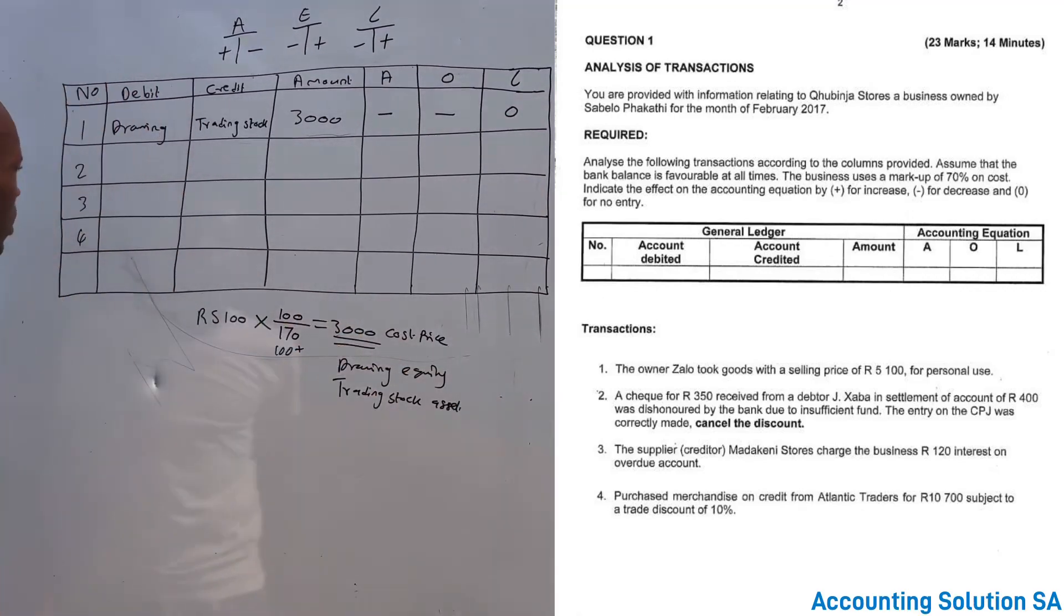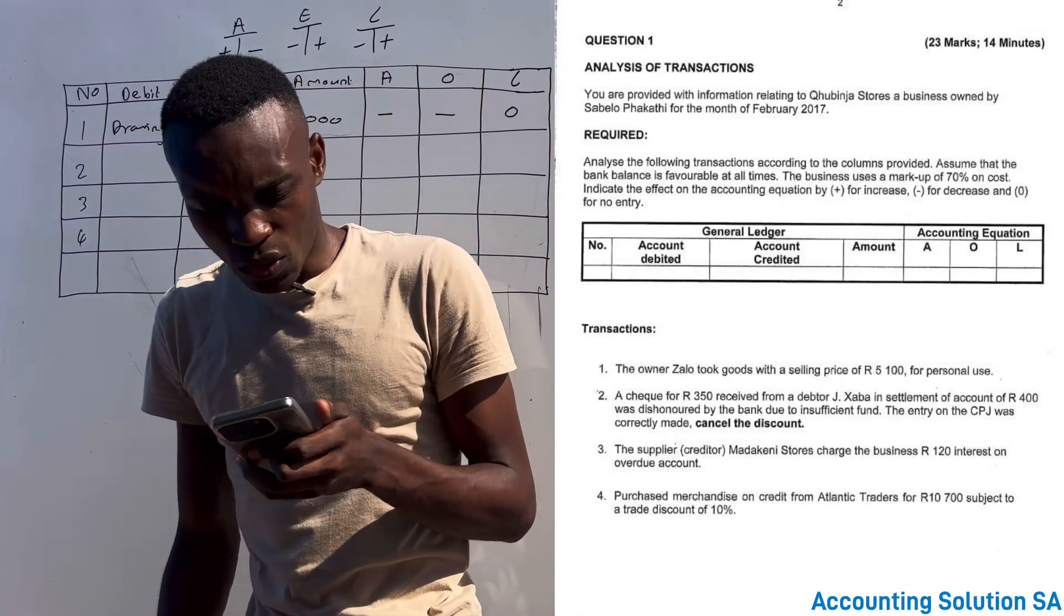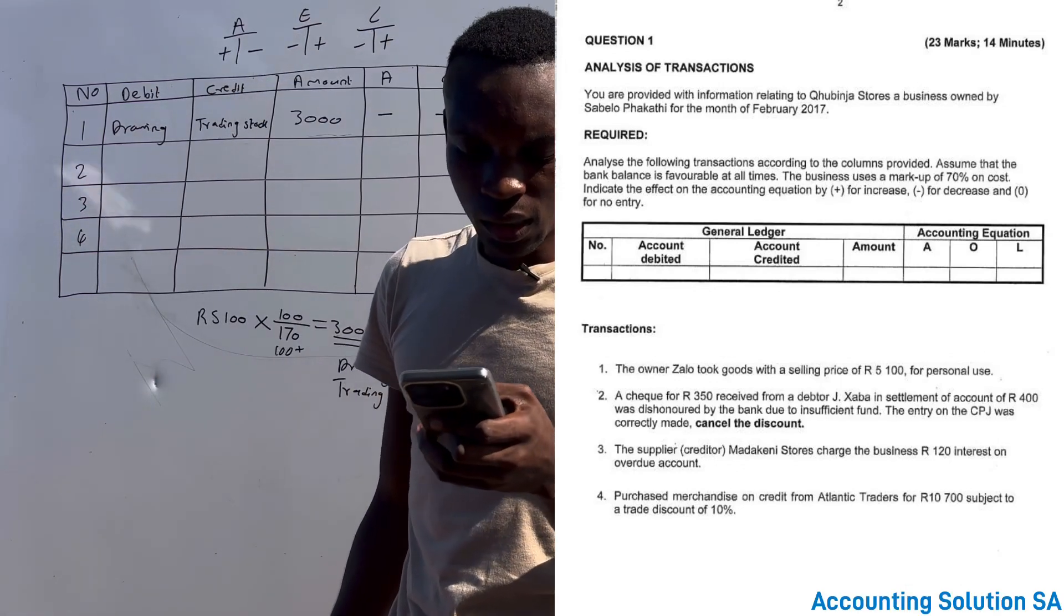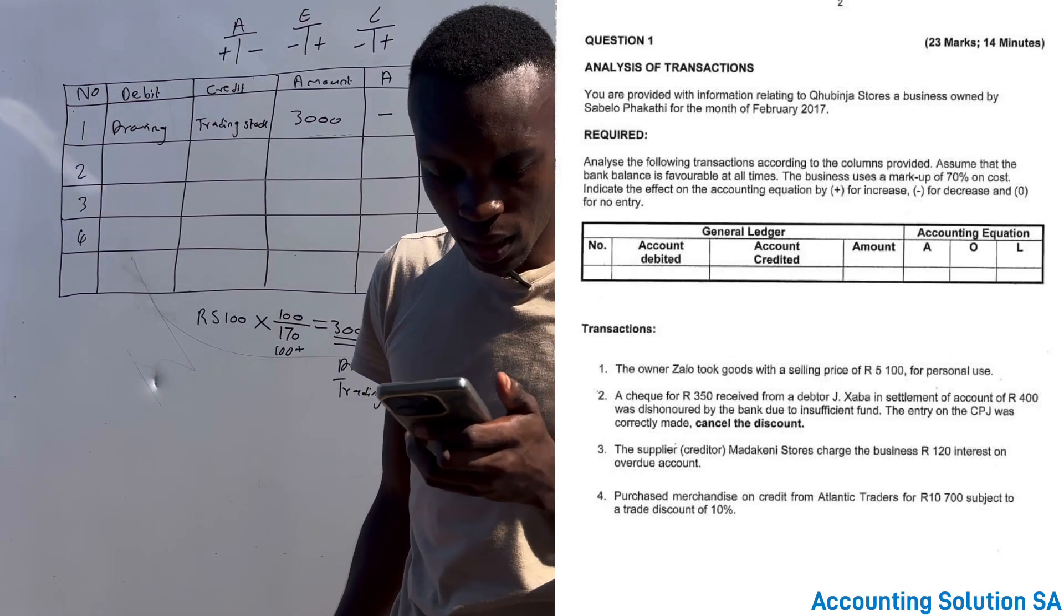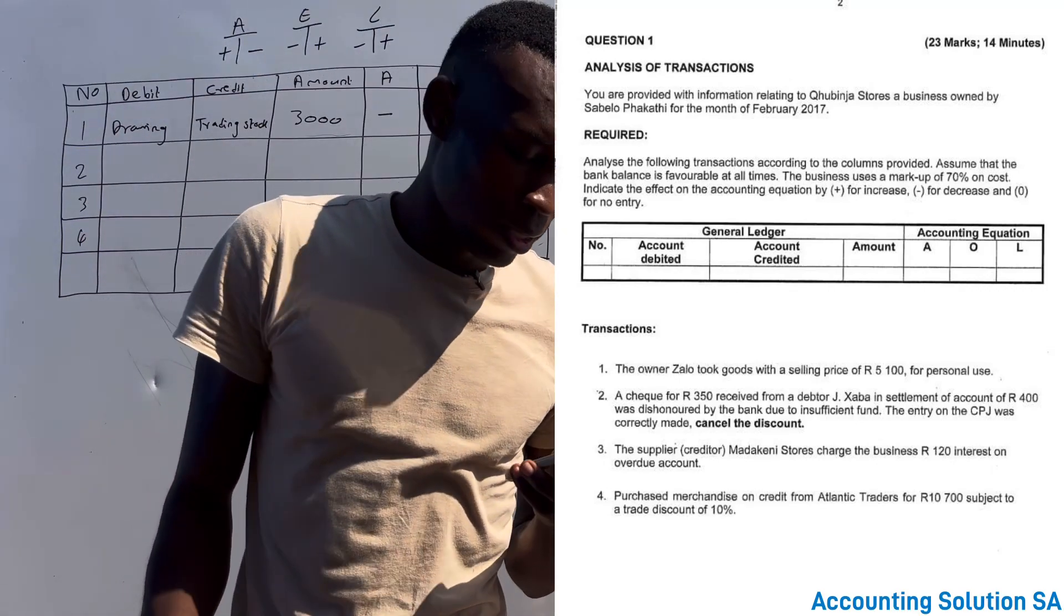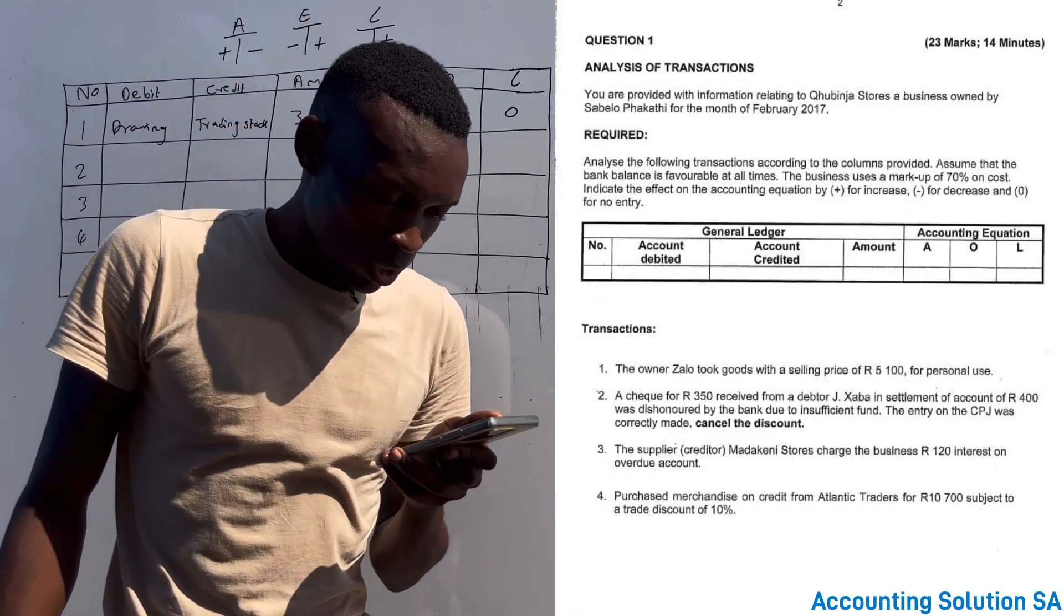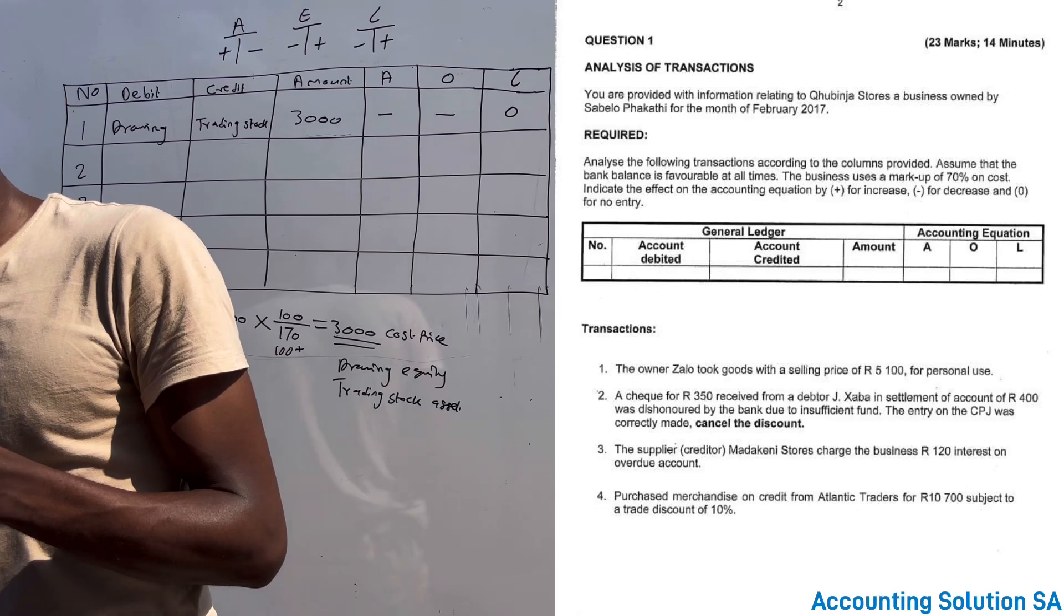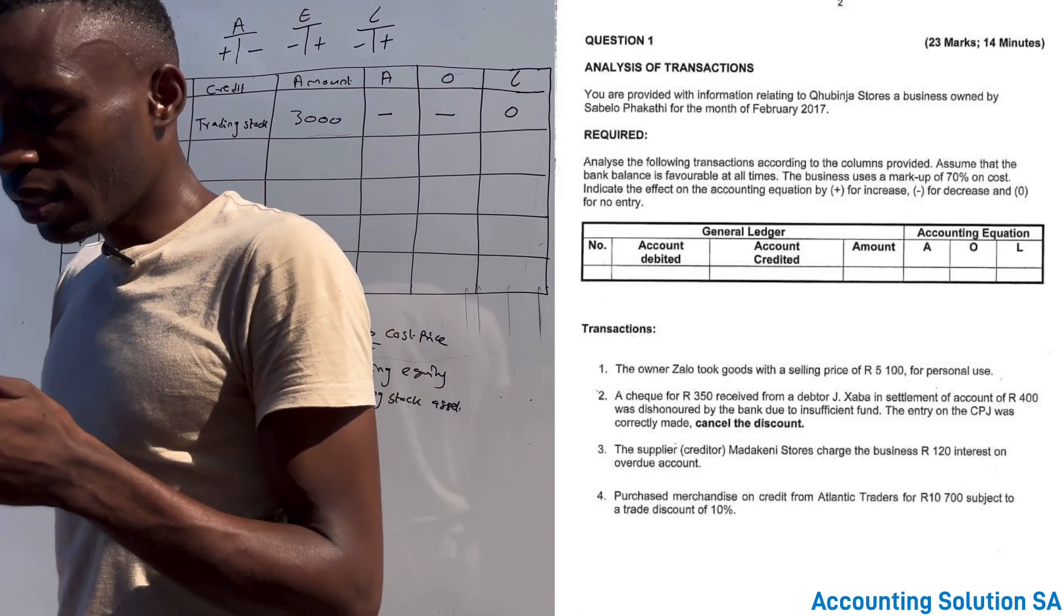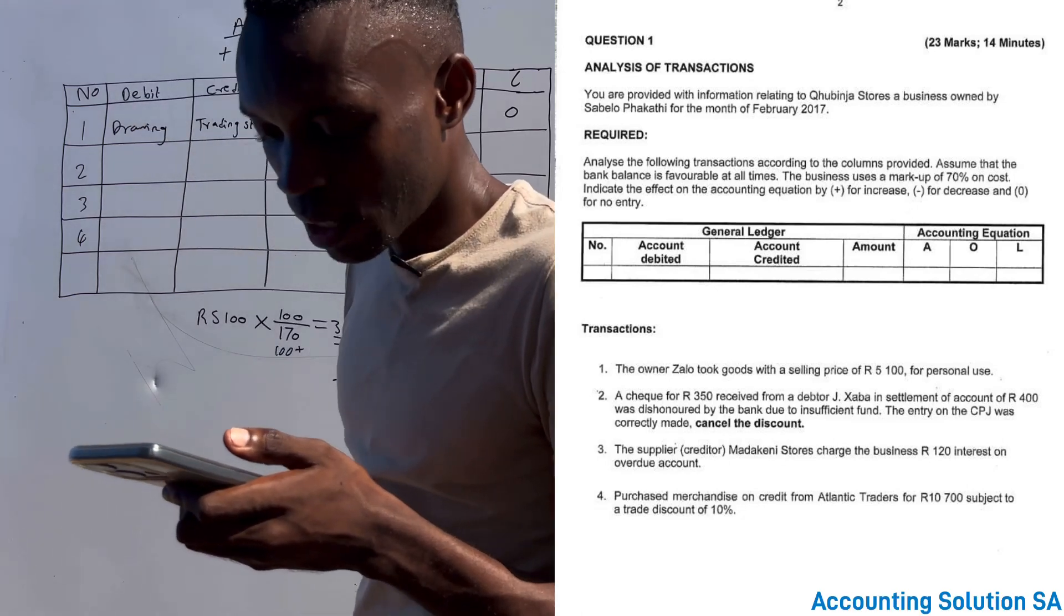Number two, let us control. They said that a check of 350 received from a debtor J. Cover in settlement of an amount of 400 was dishonored by the bank due to insufficient funds.